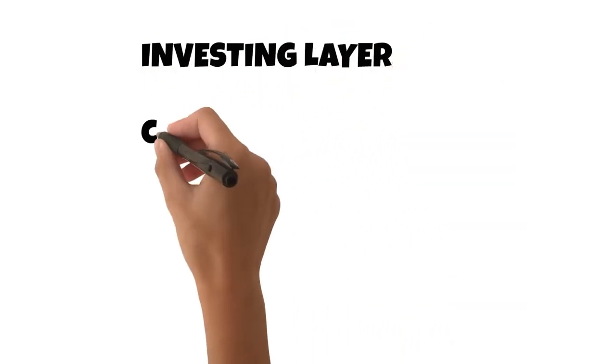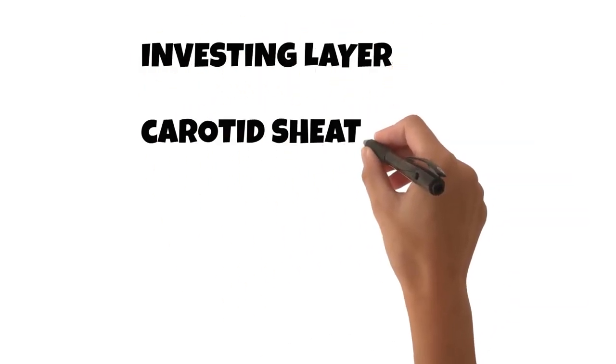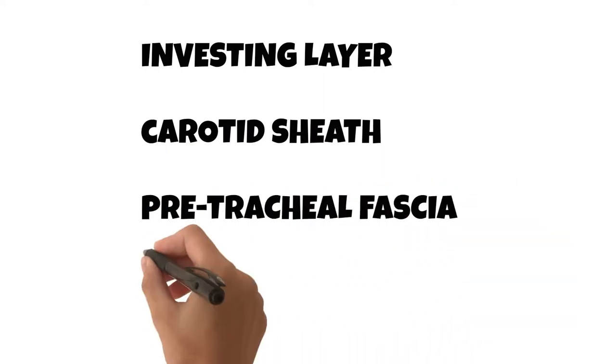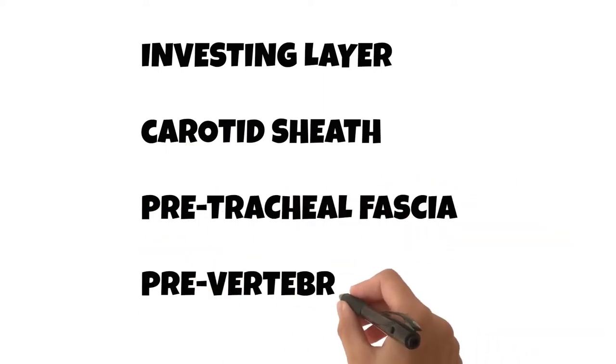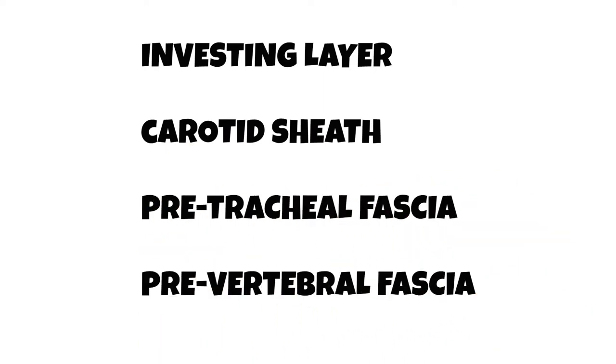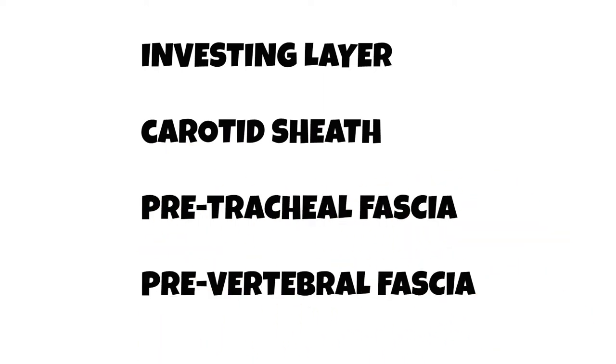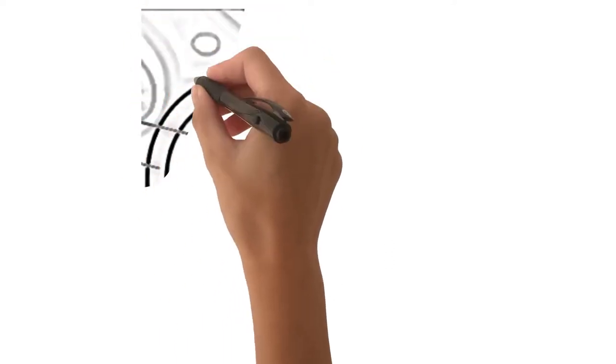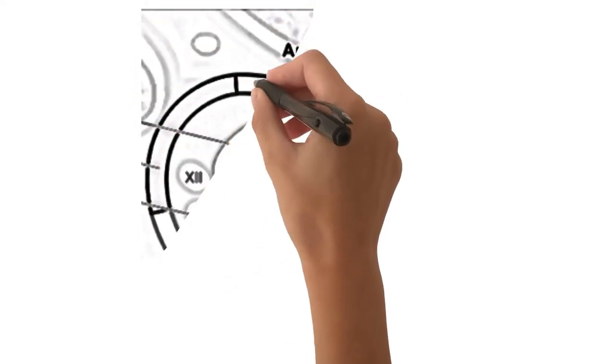The deep cervical fascia of the neck includes basically four parts. It consists of the investing layer, the crottage sheath, the pre-tracheal fascia, and the pre-vertebral fascia. And we're going to be looking at the crottage sheath in detail today.